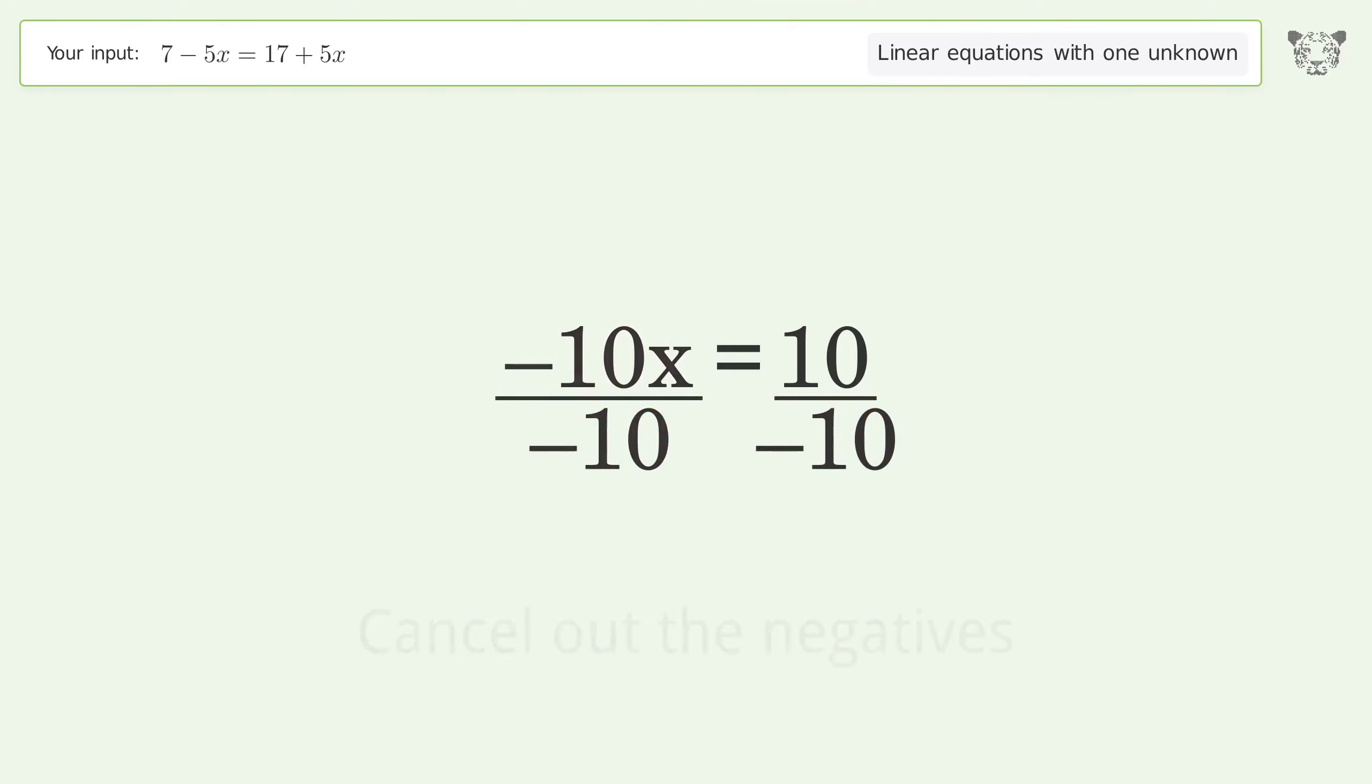Isolate the x. Divide both sides by negative 10. Cancel out the negatives.